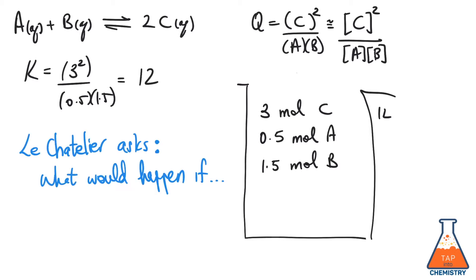Le Chatelier asks a very interesting question. He says, what would happen if, at this point, I did absolutely nothing? Well, since Q is equal to K, that means we're at equilibrium, and so the amounts of products and reactants would remain unchanged.